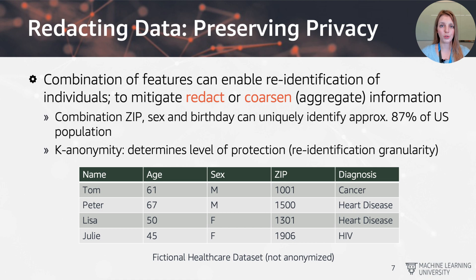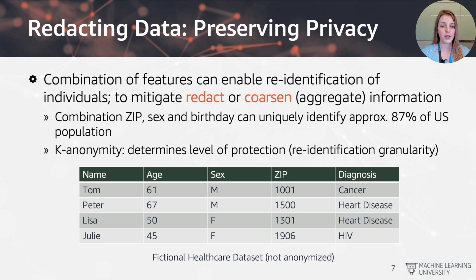This brings us to k-anonymity, which determines the level of protection or re-identification granularity. If we want 2-anonymity, it means there are at least two individuals in any given bracket. The example on this slide is a fictional healthcare dataset where individuals are given a name, age, sex, zip code, and then a diagnosis or healthcare outcome. As you can see, each individual can actually be uniquely identified if you have the age, sex, and zip code information.